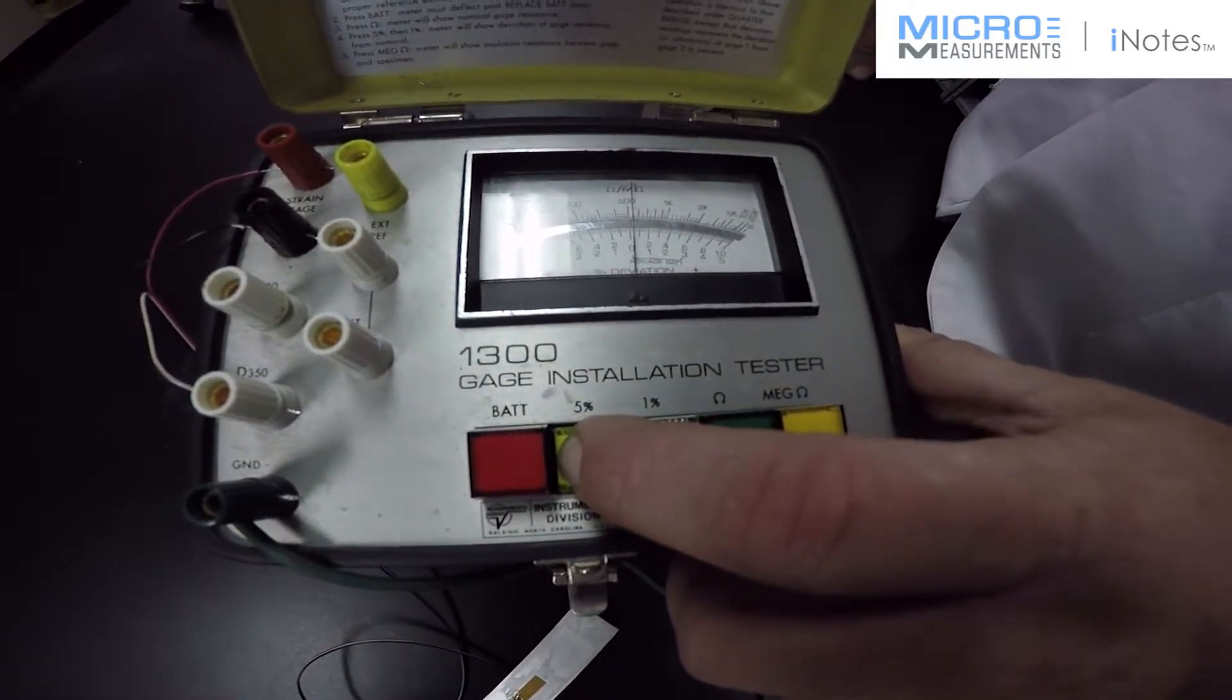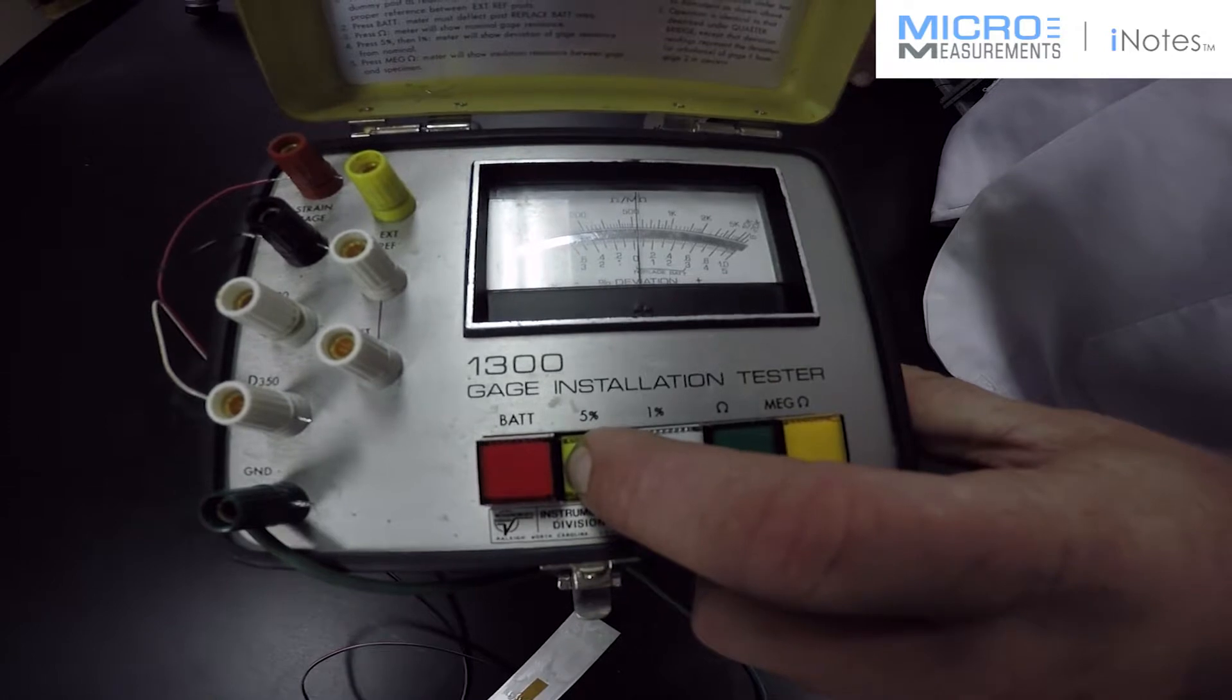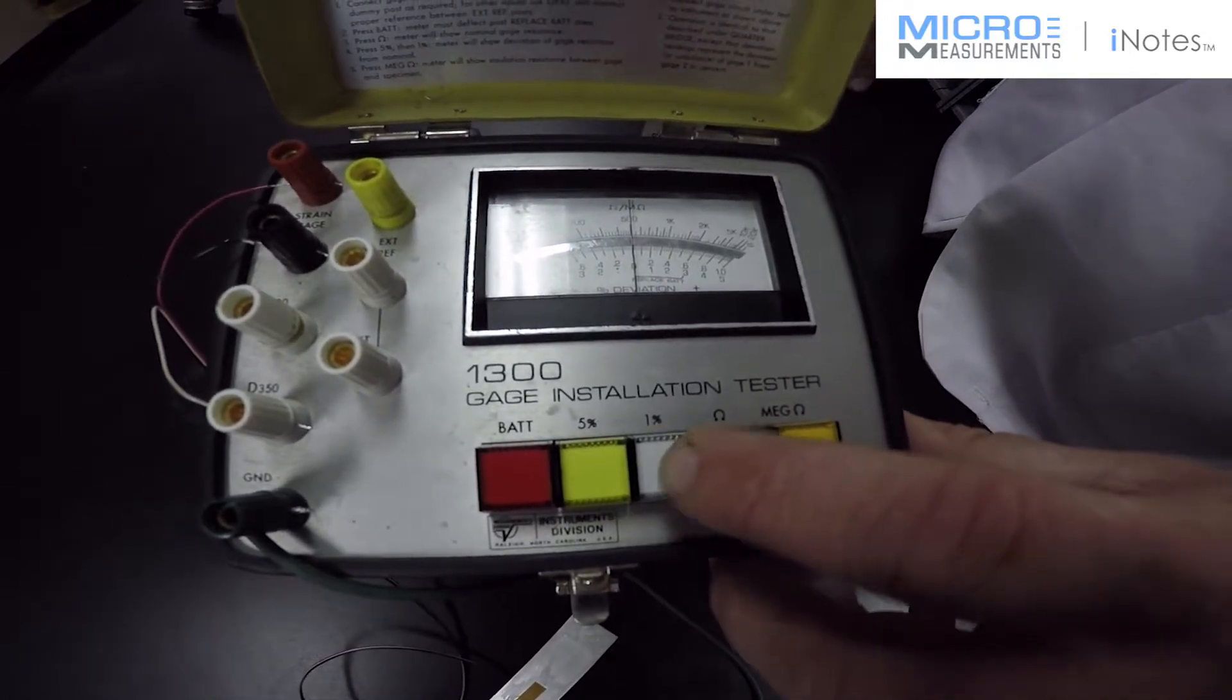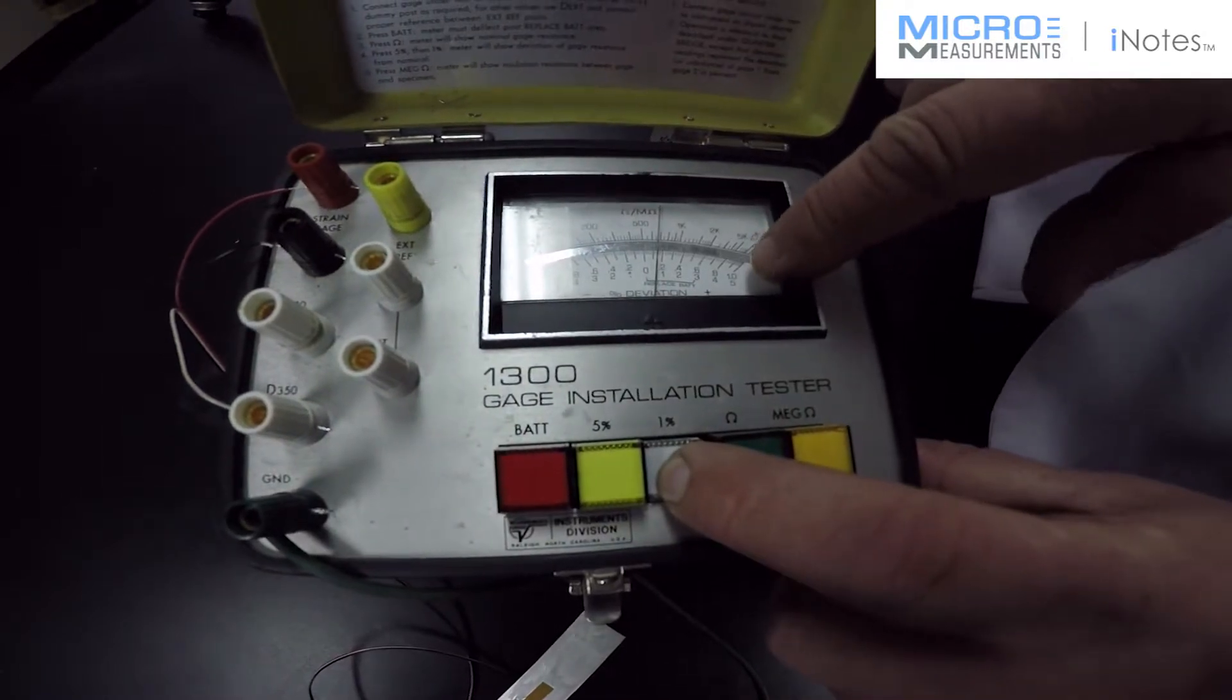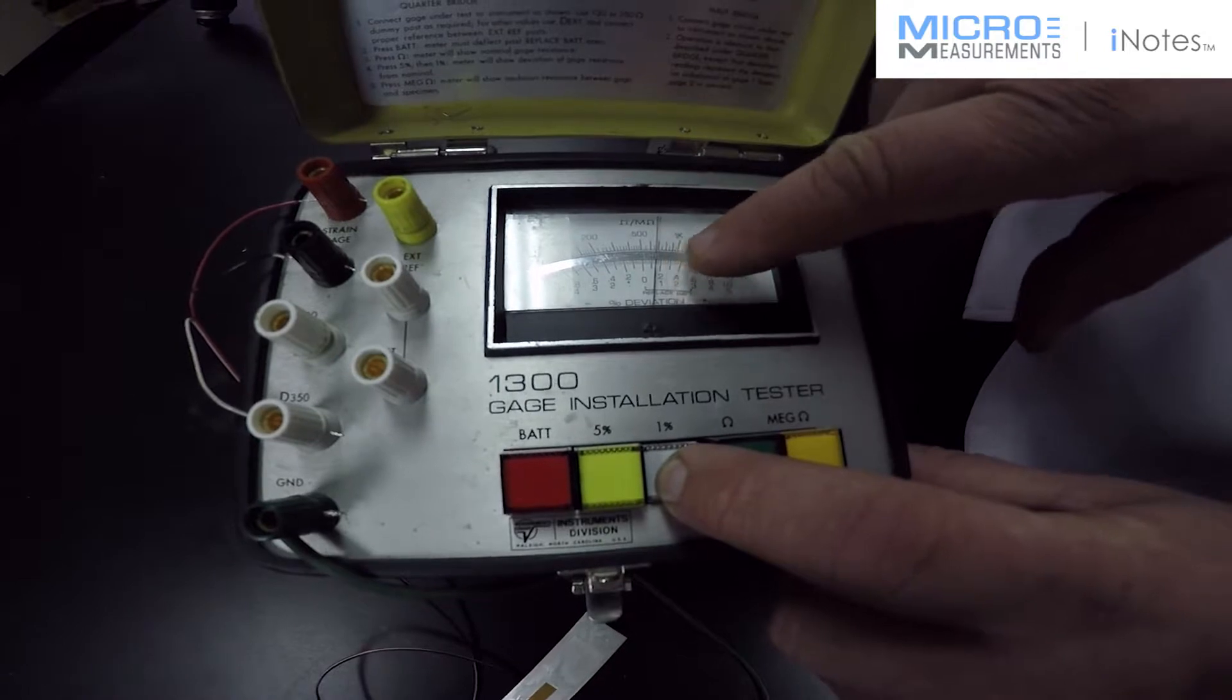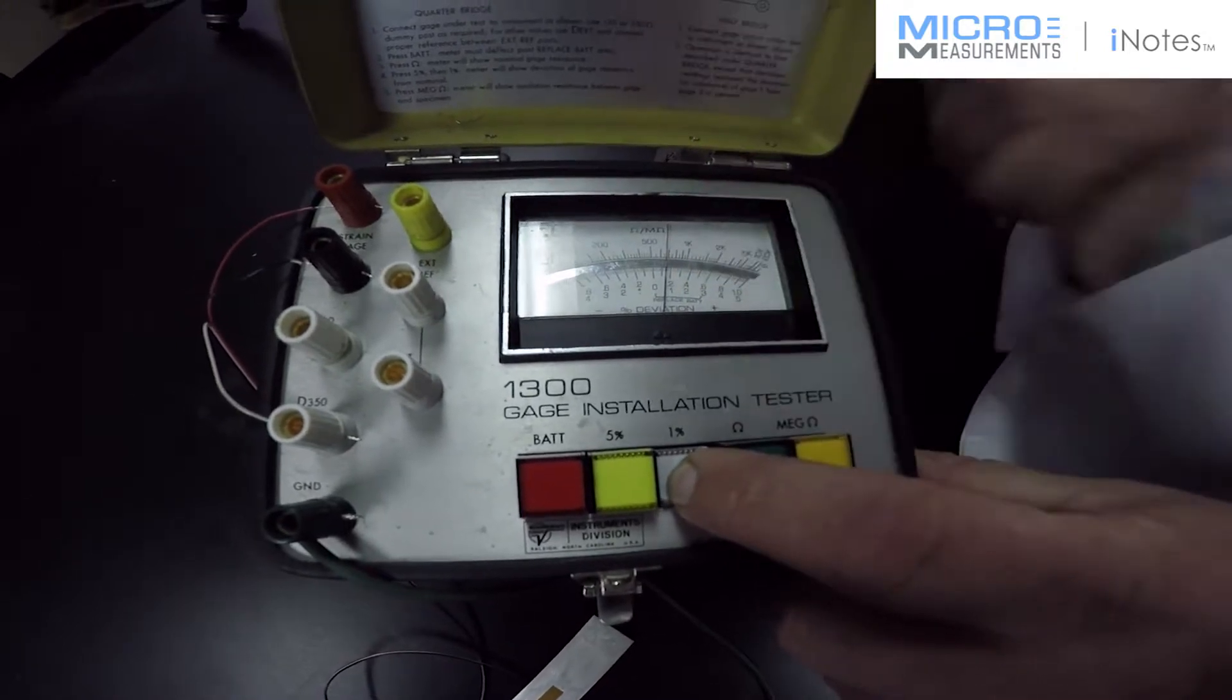So if I press the 5% button, you can see that the needle barely moves. So I need to zoom in on it a little bit, get a closer reading. So I'll push the 1% button. Now I'm reading on the 1% scale, plus or minus. And I can see that I'm about 0.15% of 350 ohms.